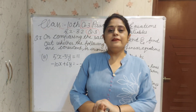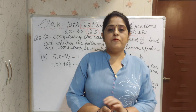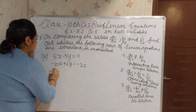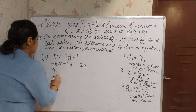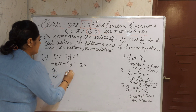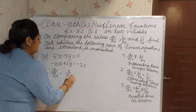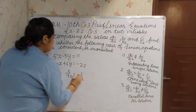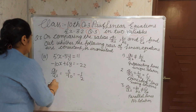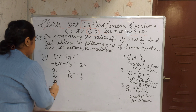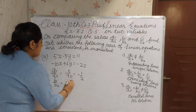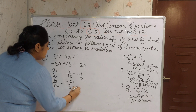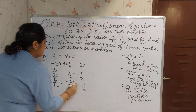Now I am explaining the third sum, fourth part. First we calculate A1 by A2: 5 upon minus 10. Reducing the term, you get minus 1 by 2. Now B1 by B2: minus 3 by 6. Reducing the term, you get minus 1 by 2.